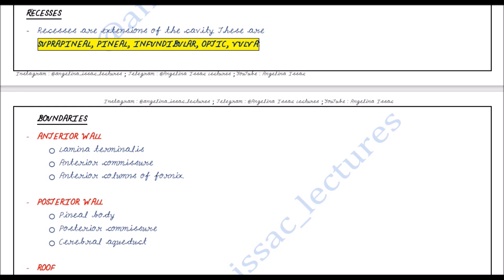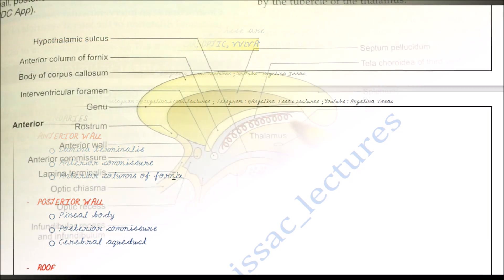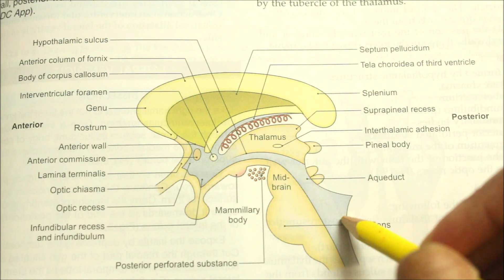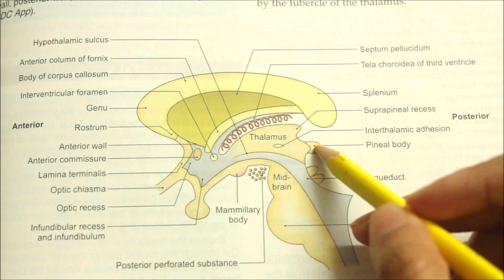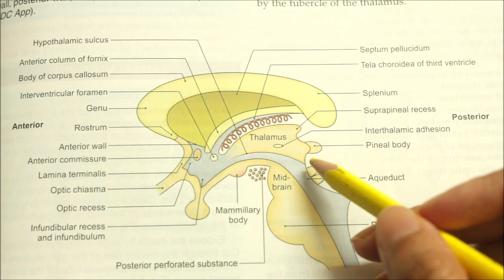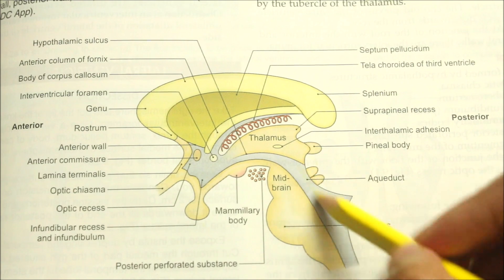To summarize the recesses and boundaries: the recesses — suprapineal, pineal, infundibular, optic, and velum — are extensions of the cavity. The anterior wall is bounded by the lamina terminalis, the anterior commissure, and the anterior columns of the fornix. The posterior wall is formed by the pineal body, the posterior commissure, and the cerebral aqueduct.